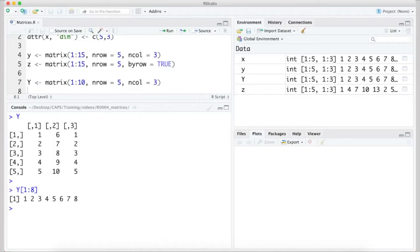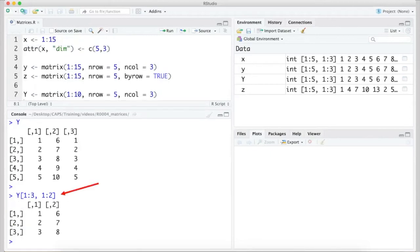Indexing the matrix in two dimensions requires that both dimensions are specified in the square brackets. This is done by separating them with a comma, in the order rows comma columns. So, I can pull out the value from the third row and second column with y square bracket 3 comma 2, which returns 8. Alternatively, I can get the first three rows and first two columns with y square bracket 1 colon 3 comma 1 colon 2.